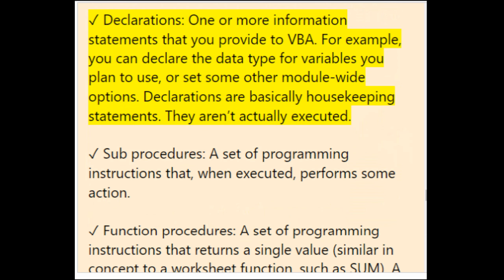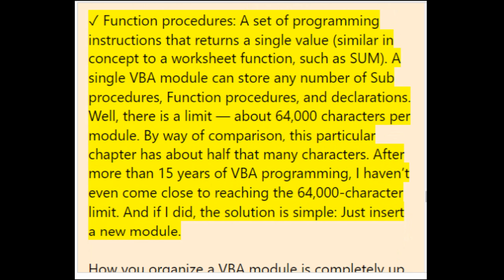Declarations are information statements you provide to VBA — for example, declaring data types for variables or setting module-wide options. They aren't actually executed. Sub-procedures are a set of programming instructions that, when executed, perform some action. Function procedures return a single value, similar to a worksheet function like SUM. A single VBA module can store any number of sub-procedures, function procedures, and declarations — up to about 64,000 characters per module.